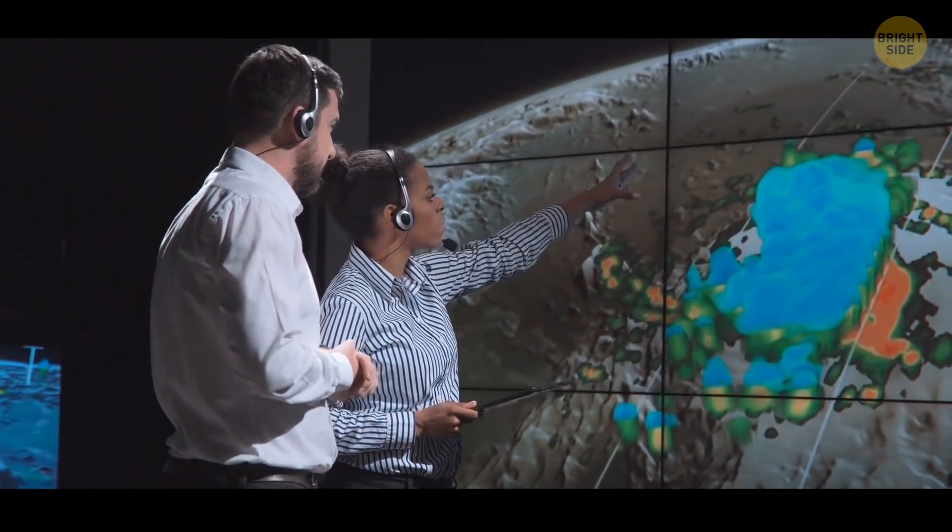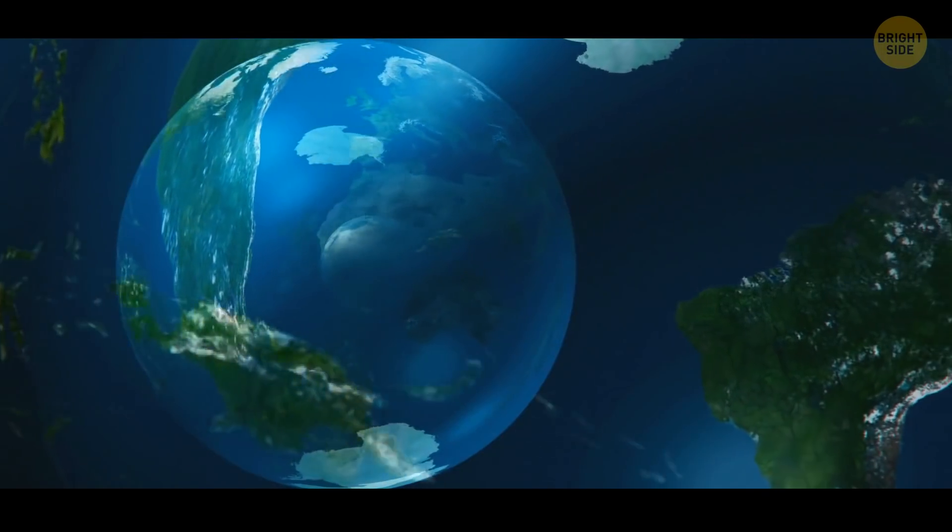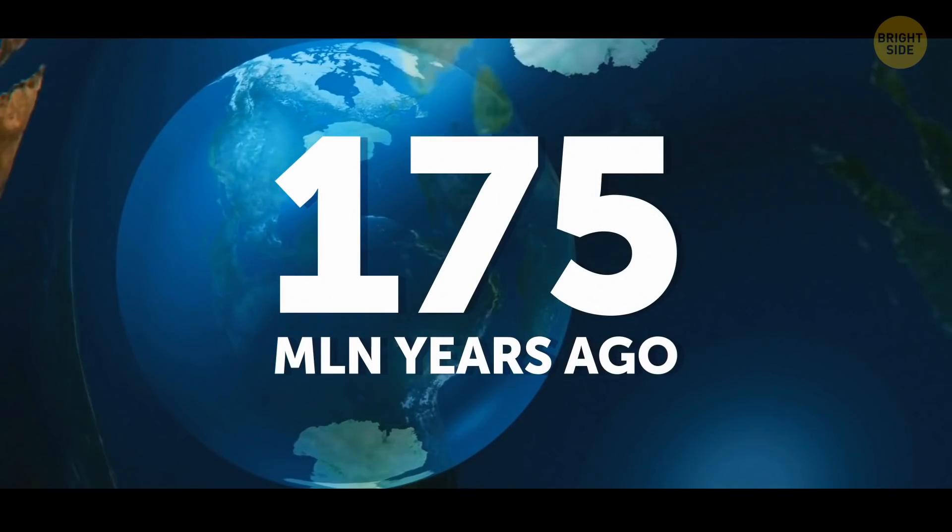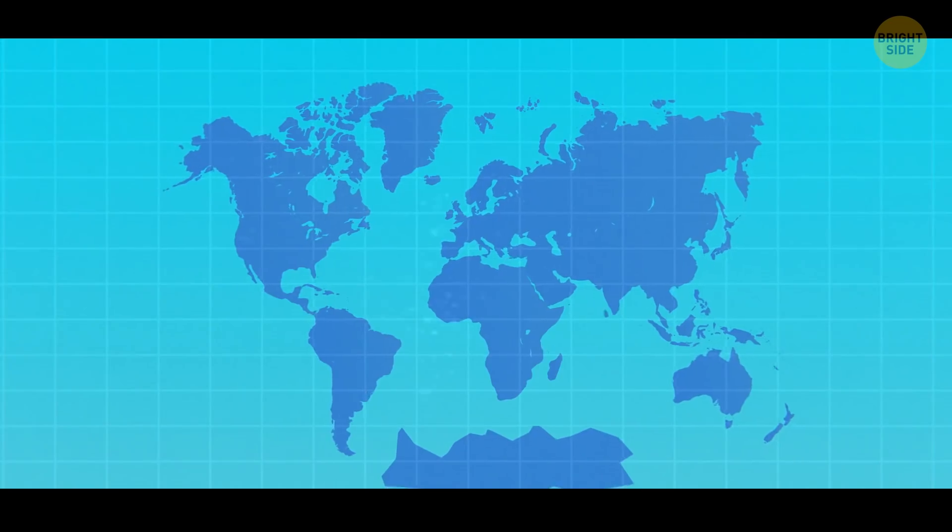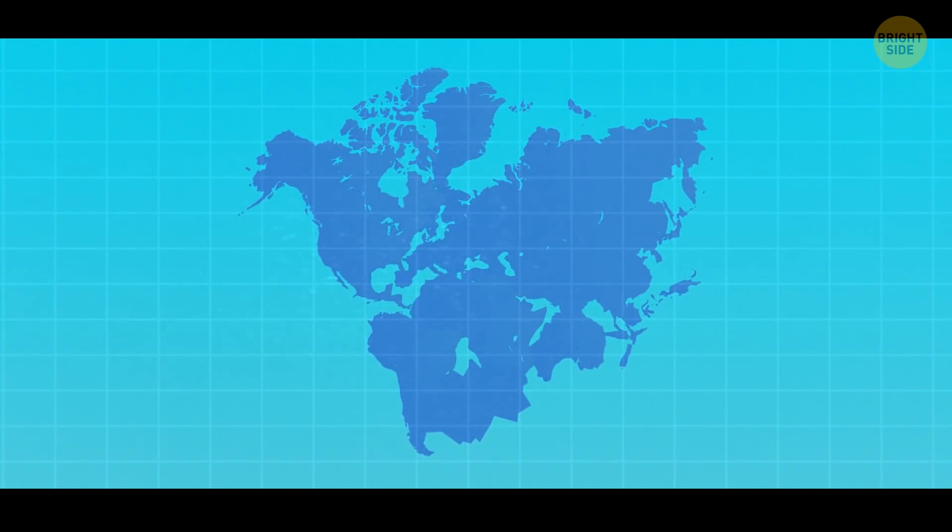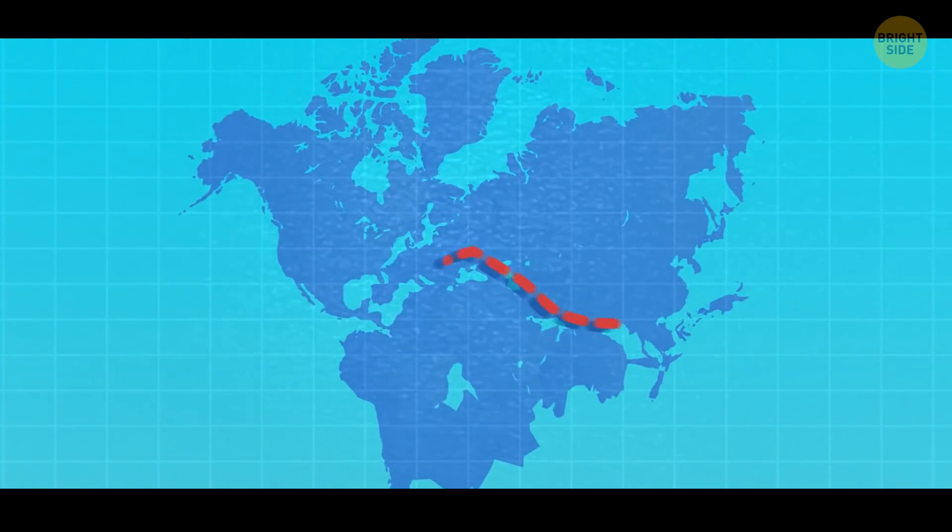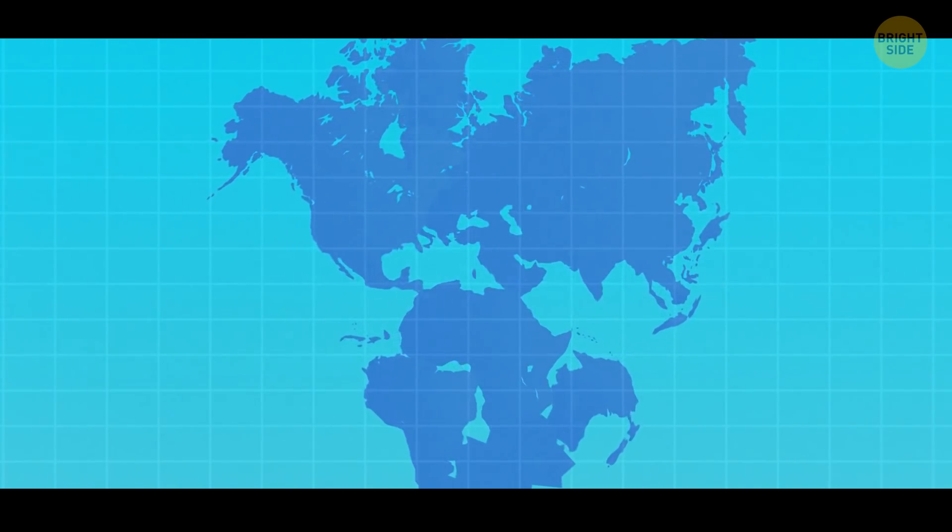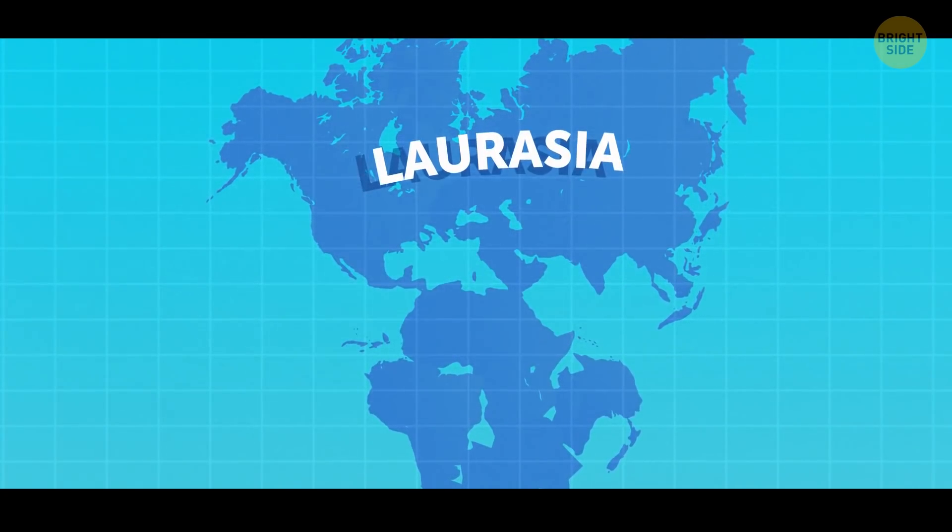Scientists think Pangaea, a supercontinent if there ever was one, broke apart 175 million years ago. But not into those two big left and right puzzle pieces we have today. Instead, the split probably ran horizontally, leaving a connected North America, Europe, and Asia on top, a mass called Laurasia.